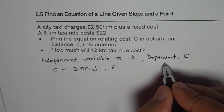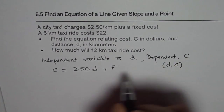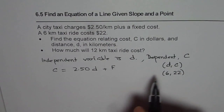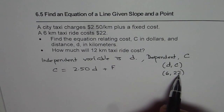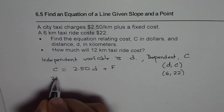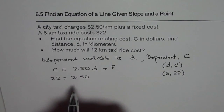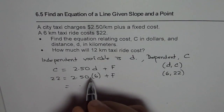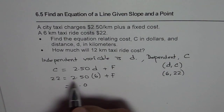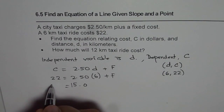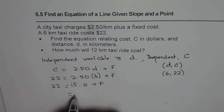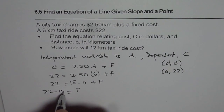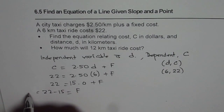Our coordinates are D and C. So if D is 6 kilometers, then the cost is 22. We will replace D with 6 and cost with 22 and find F. So we can write: 22 equals 2.50 times 6 plus F. Multiplying 2.5 by 6 gives us 15. So 15 equals 22 plus F... wait, that gives F equals 22 minus 15, which equals 7.